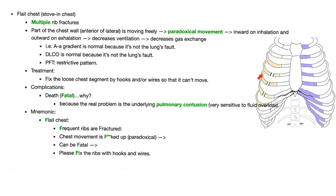Treatment: fix the loose segment of the chest using hooks and/or wires so that it cannot move — fix it in place. Complications: it could be fatal if left untreated. Why? Because of pulmonary contusion, which leads to fluid overload. A contused lung is very sensitive to fluid overload, and this is the cause of death.